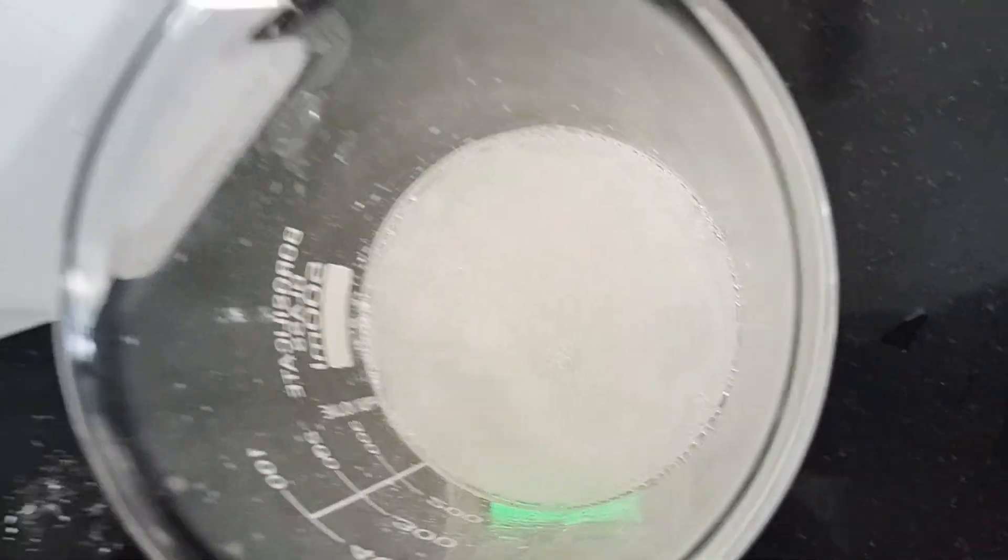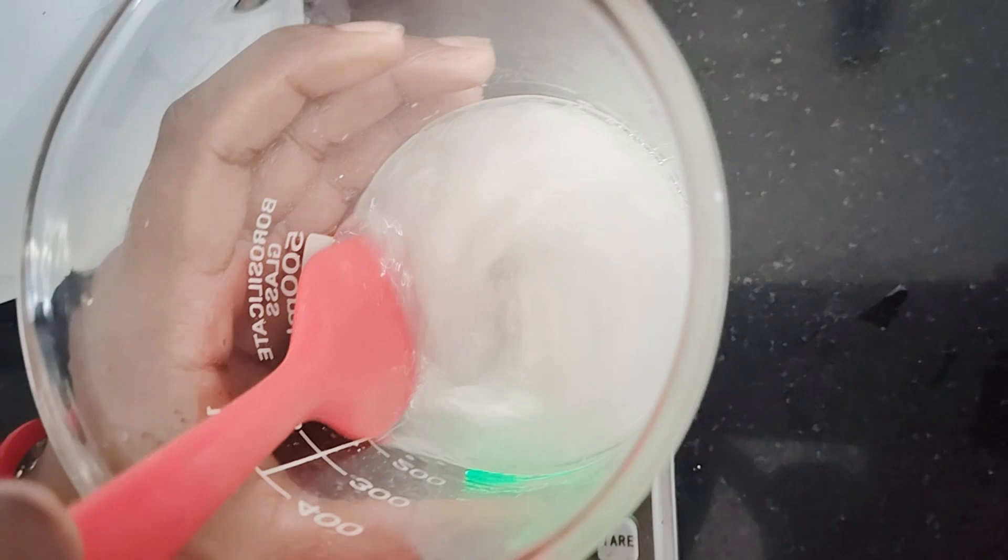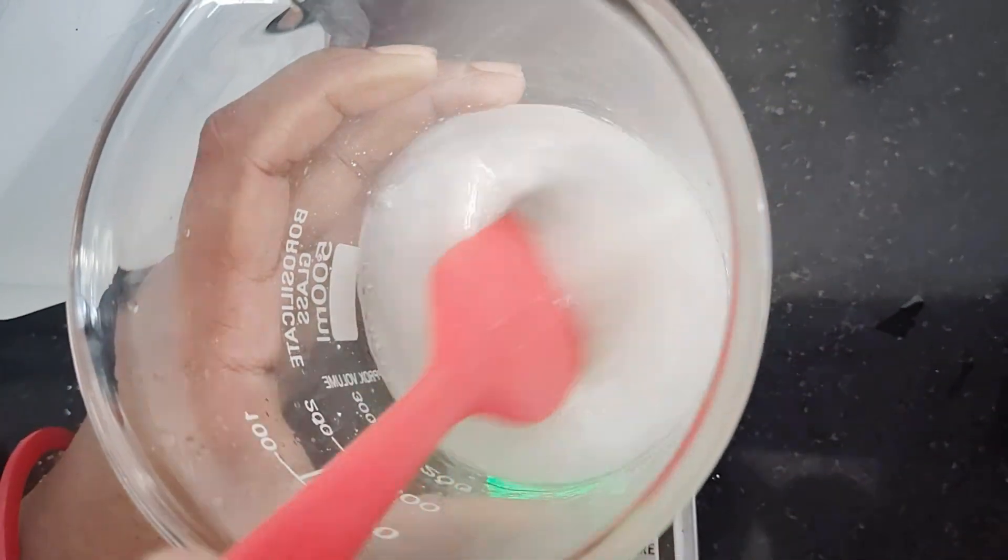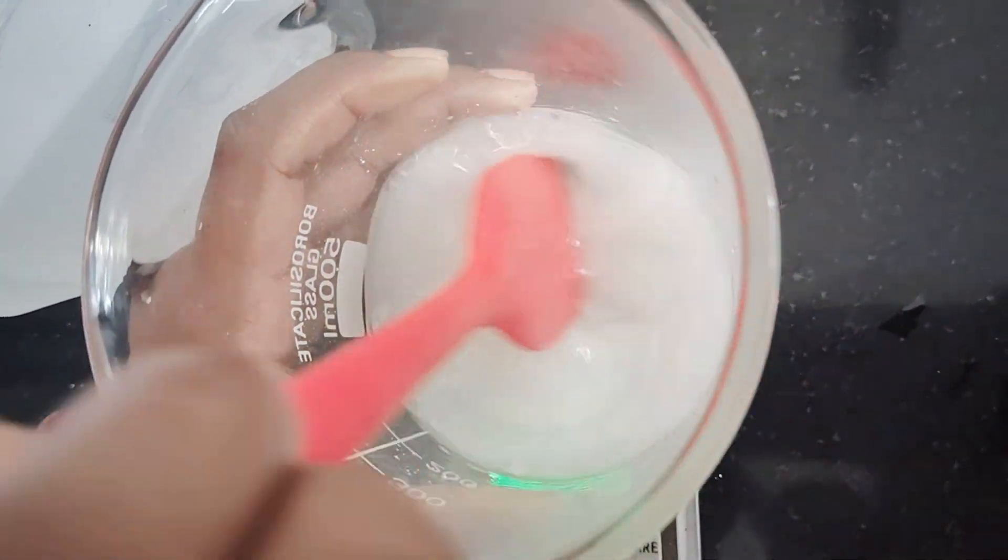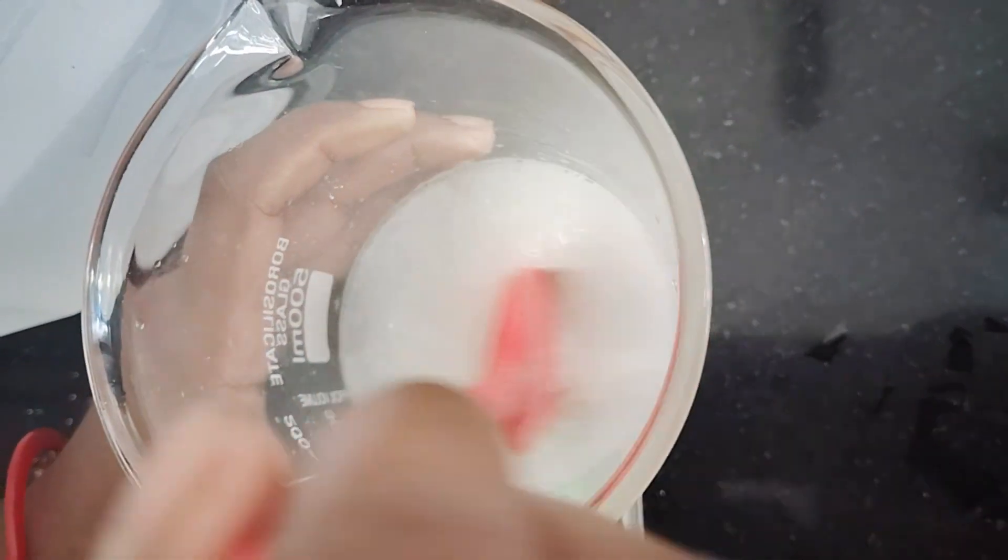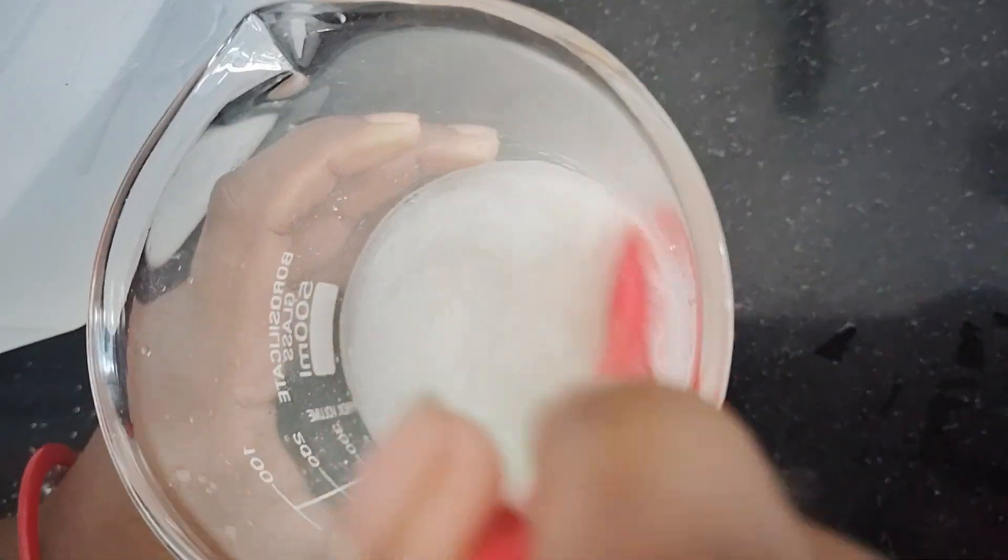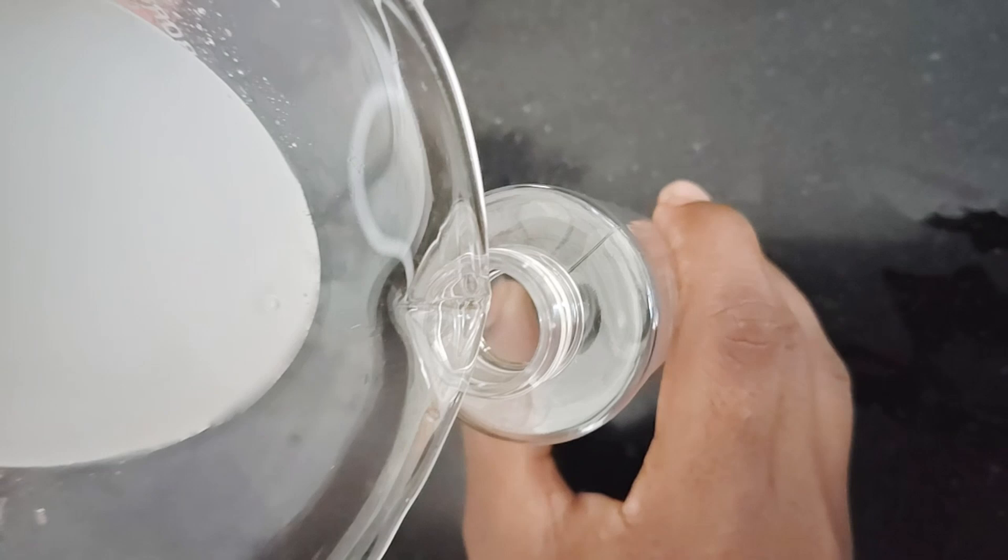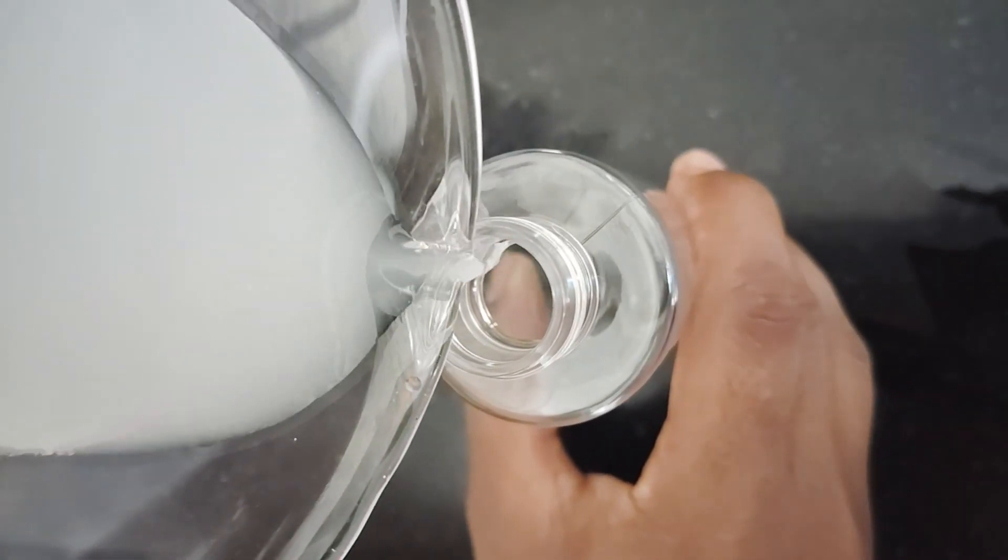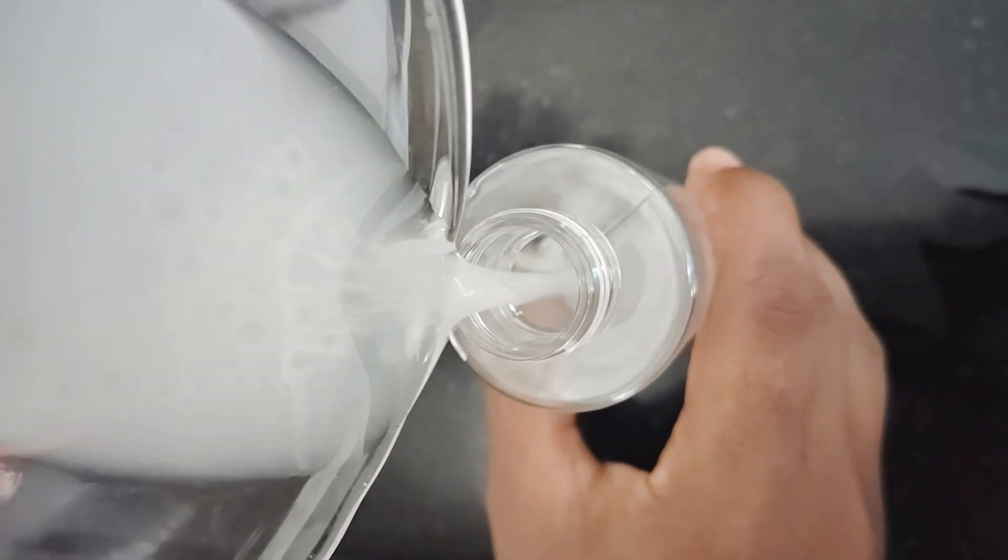I have just added everything, and the pH of this formulation will be around 5.5, which is the perfect pH. Now you can see there is a cloudy liquid formulation. I'm just pouring this into my spray bottle. Make sure everything is sanitized.